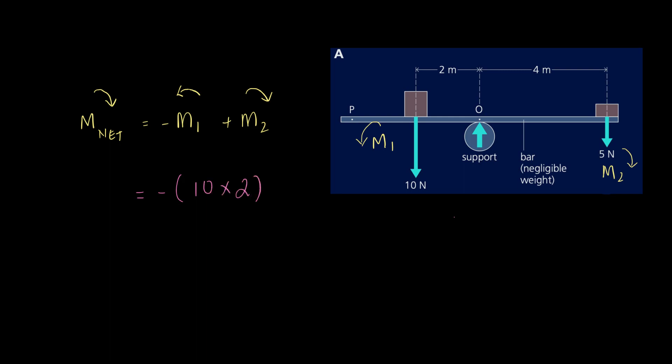Let's put that in our equation. Moment 1 is negative, force is 10 multiplied by the distance which is 2, plus moment 2 which is a force of 5 Newtons a distance twice away. We're essentially figuring out which way the seesaw is going to turn or not turn.